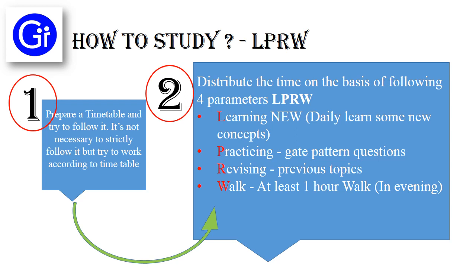L stands for Learning new concepts daily. P is for Practicing — practice only GATE pattern questions, because GATE has a different standard and questions not up to GATE standards are very easy. R is for Revising previous topics — the topics you have read in the last week or month must be revised, otherwise you will forget them. W is for Walking — walk at least one hour in the evening, because when you go outside you feel free and try to grasp whatever you have read throughout the day.